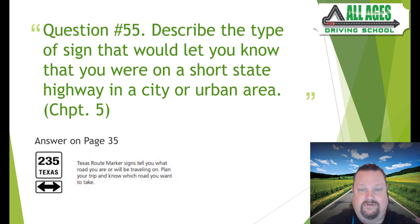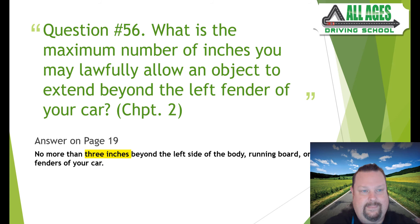Question number fifty-five: describe the type of sign that would let you know you were on a short state highway in a city or urban area. Found on page 35. For example, Texas 235 — a Texas route marker sign tells you what road you're on while traveling, helping you plan your trip and know which road to take.